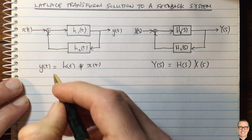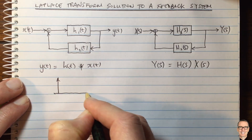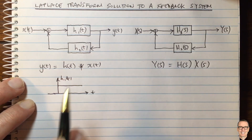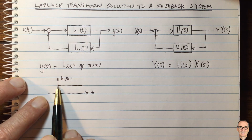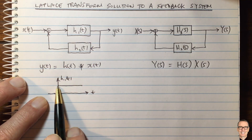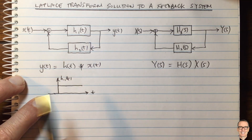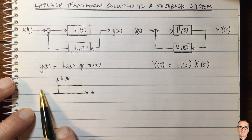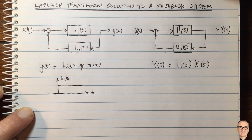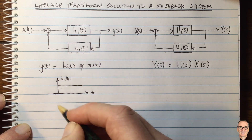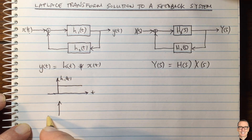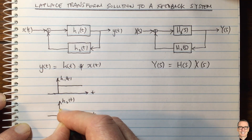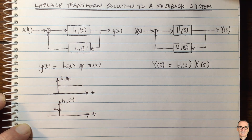Let's look at an example where the forward filter is an integrator, so the impulse response H1(T) is a step function. When an impulse comes into this integrator filter, the output remains constant, and future inputs get added to that value, continuously accumulating. For the feedback path, let's use a simple multiplicative gain, so the impulse response H2(T) will be a delta function scaled by the gain value A.